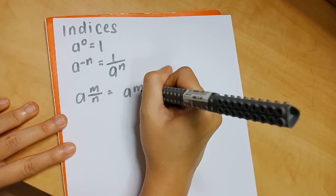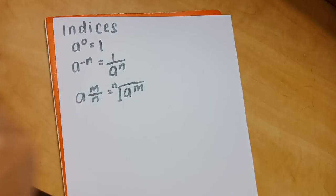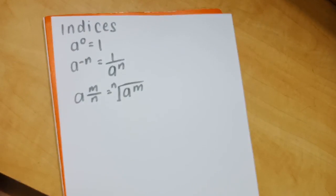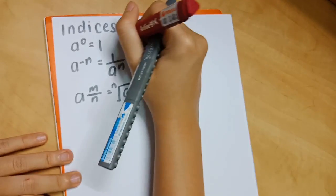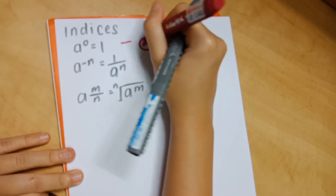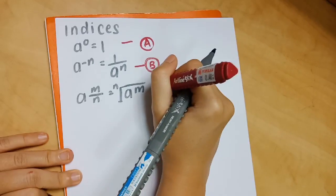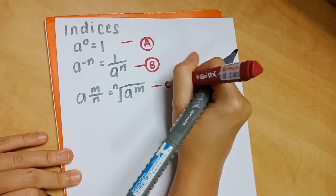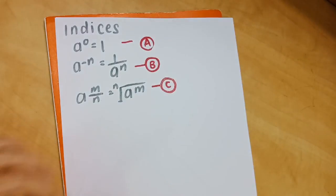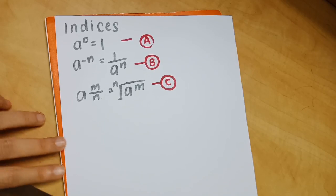These are the three things you should remember for indices. First, a to the power of 0 equals 1. Second, a to the power of negative n equals 1 over a to the power of n. Third, a to the power of m over n — if you write it with a square root, that is what it will look like.